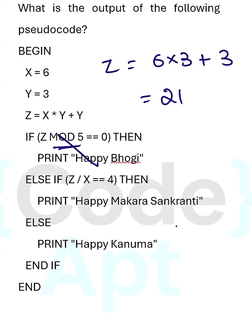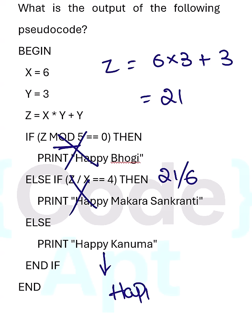Then 21 divided by X — X is 6. Is 21 divided by 6 equal to 4? No, it is not equal to 4, so this will not display either. The output to display is Happy Kanuma.